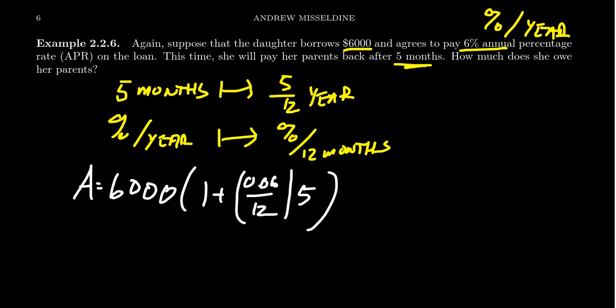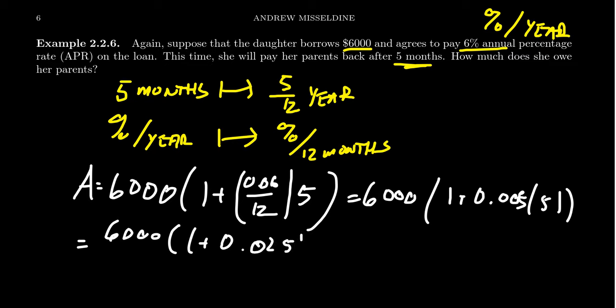When we do that, 0.06 divided by 12 is going to give us 0.005. Times that by five, we get one plus 0.025. Add that to the one, you get 1.025.